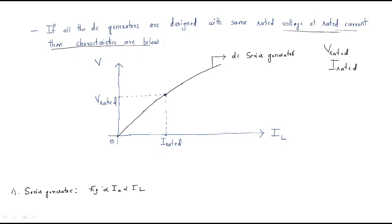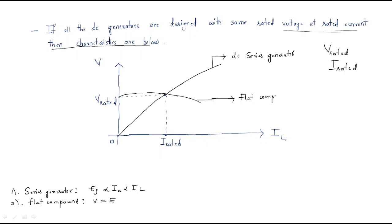Next, the flat compound generator. When increasing the load current, the terminal voltage is approximately equal to the induced EMF. The flat compound generator gives a flat voltage — the same as the generated EMF.